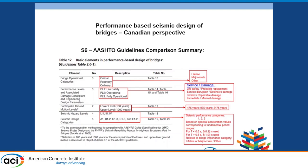We have three seismic levels at this point. Even though we're looking at three levels — the 475, 975, and 2475 year return periods — when we look at a bridge, depending on various other factors, only two come in. So overall there are three levels, but for any given structure you'll only be looking at two.